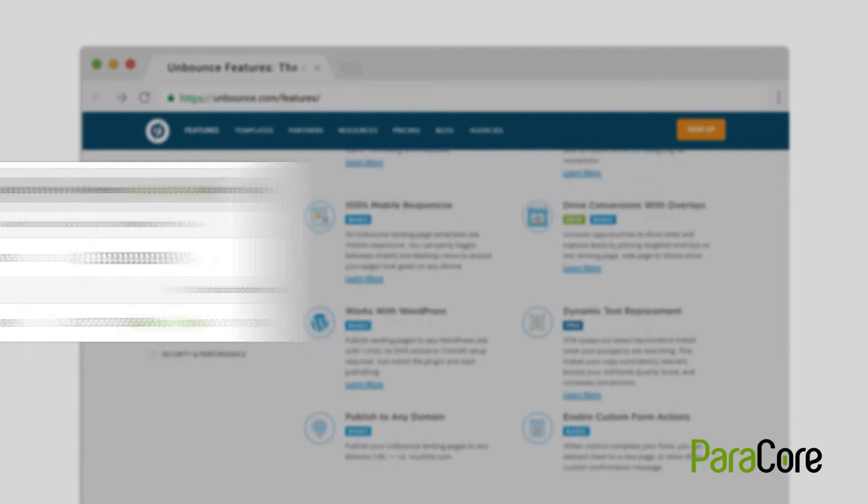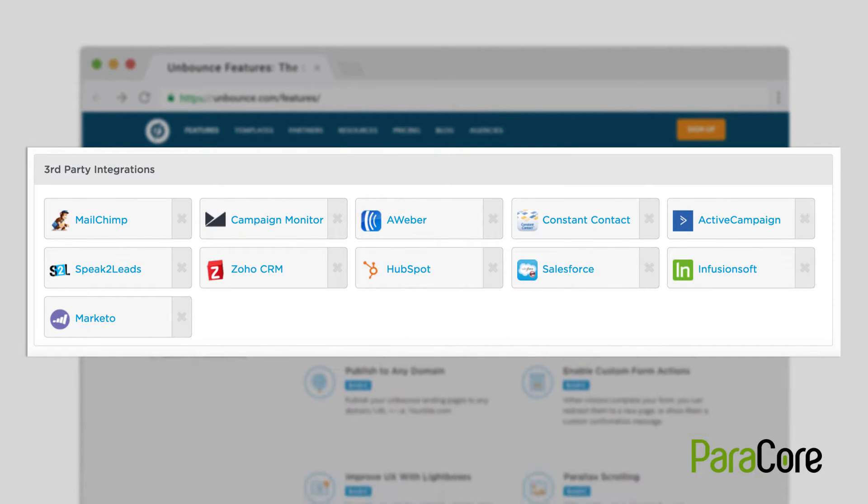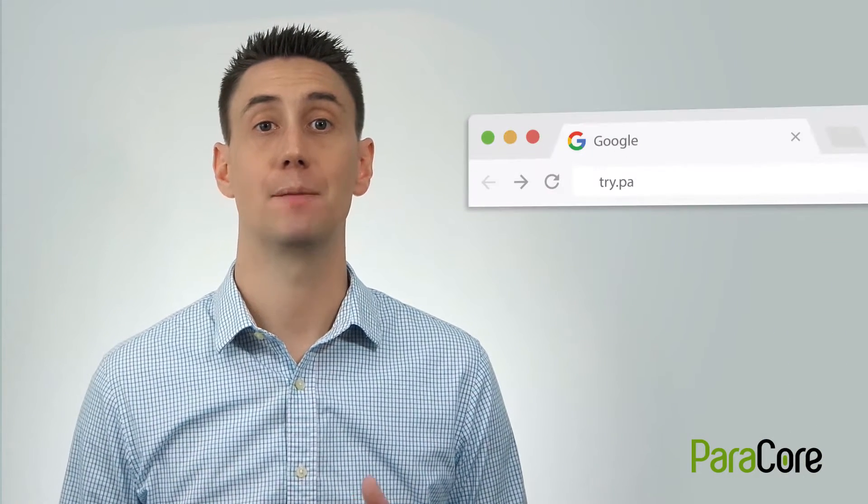On top of that, Unbounce lets you integrate form submissions with popular CRMs like HubSpot and FusionSoft and more. You can even set up branded subdomains like we did with try.paracore.com/ppcoffer.